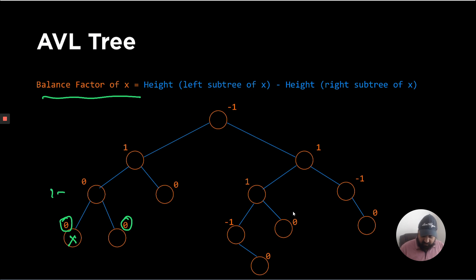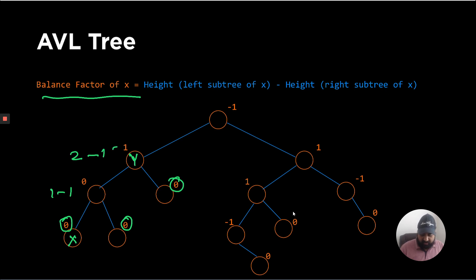For this node it is going to be 1 minus 1, so 0. For node y, the left height is 2 and the right height is 1, so the balance factor is 2 minus 1 which equals 1. If you use the zero-based approach it would be 3 minus 2, which is again 1. It doesn't matter which approach you use.